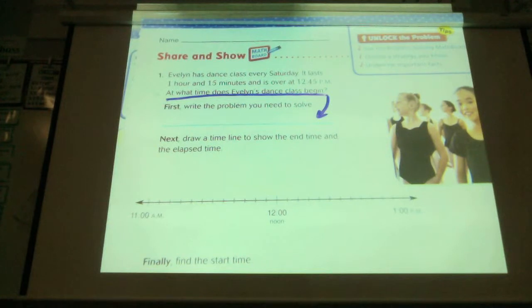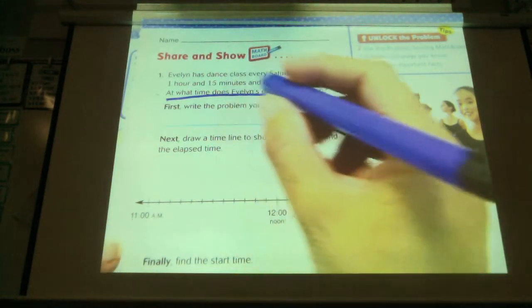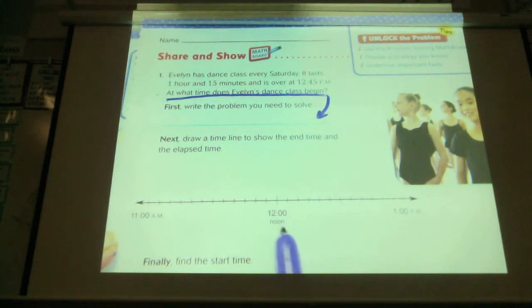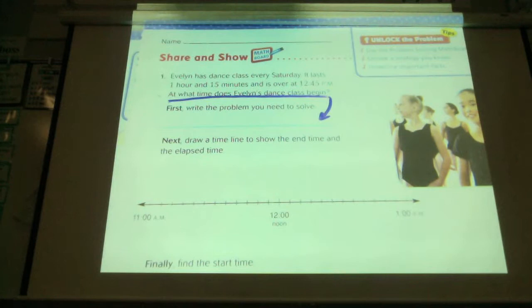First, what problem do we need to solve? Okay, what time does her class begin? Next, we're going to draw the number line. It is over at 45. So I'm going to double check. I think these might go by 5. Let's see. 12:00, 5, 10, 15, 20, 25, 30, 35, 40, 45, 50, 55, 60. So I was right. They go by 5.